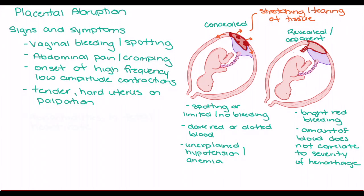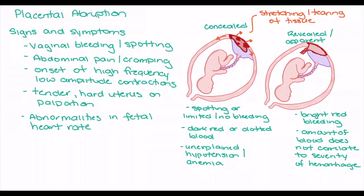Due to stress and lack of oxygenation for the fetus, heart rate abnormalities such as decelerations, bradycardia, or reduction in variability may be observed. The stress placed on the fetus can also lead to a release of CRH, which — combined with the onset of high-frequency, low-amplitude contractions — can lead to premature labor. Finally, fetal asphyxia is common as bleeding worsens, which can lead to stillbirth.